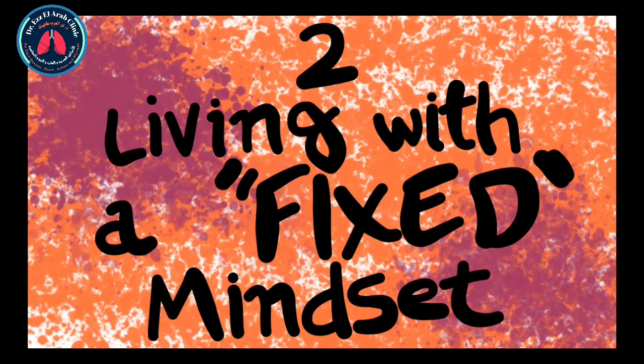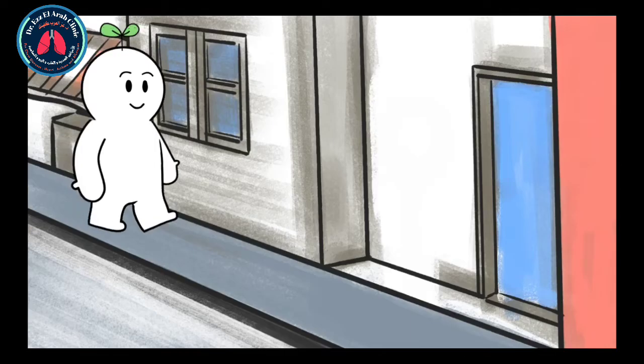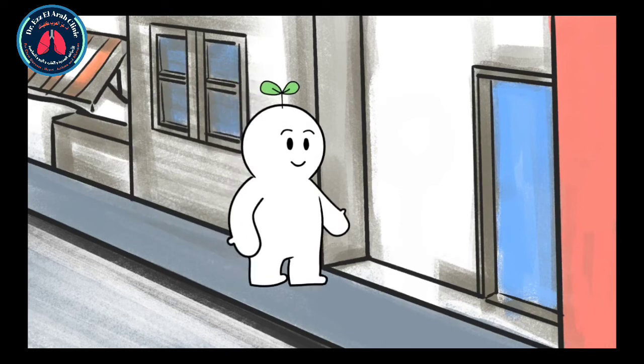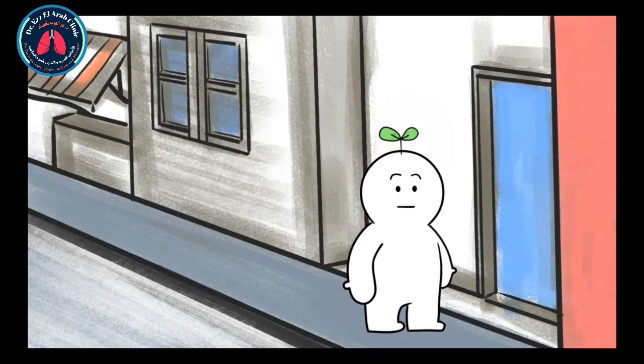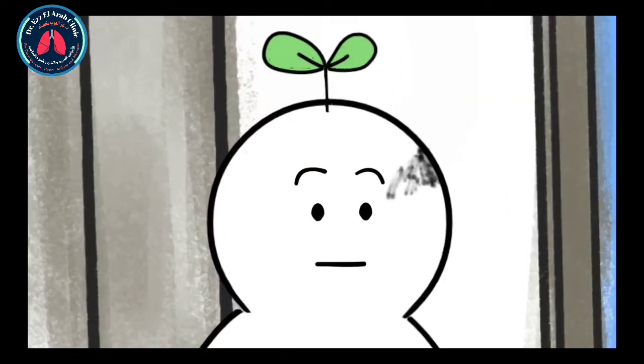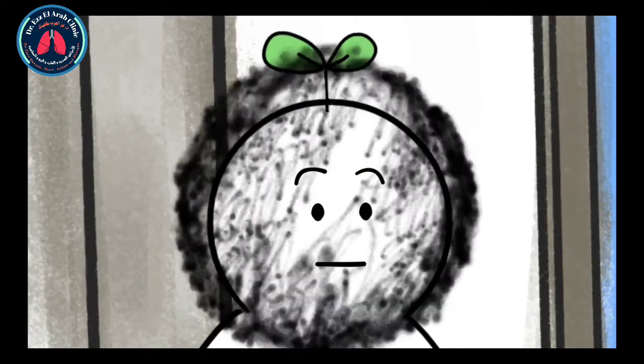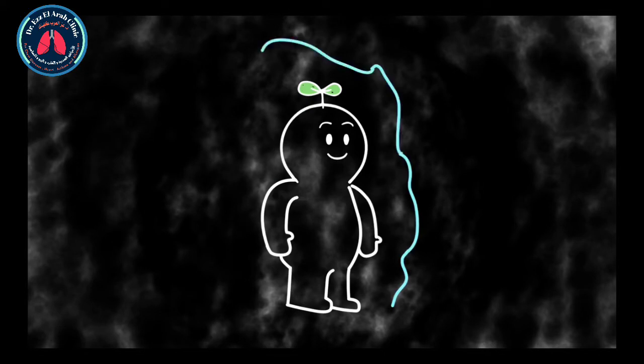Two, living with a fixed mindset. People who believe that their qualities are fixed and unchangeable have a fixed mindset. For example, this could be someone who believes they'll never succeed in math because they weren't born a genius. A person with a fixed mindset may feel unmotivated to learn because they believe that they're not cut out for it, when this is actually far from the truth.